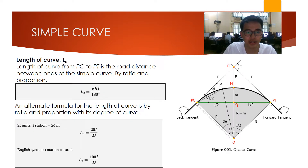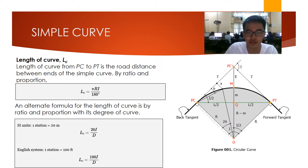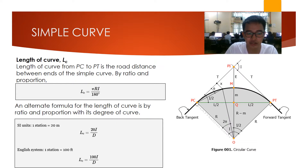We also have the length of curve, that is Lc. The length of curve from PC to PT is the road distance between the ends of the simple curve. By ratio and proportion, we can derive: Lc is equal to pi times radius times the angle of intersection divided by 180 degrees. An alternate formula for the length of curve by ratio and proportion with the degree of curve: in SI units, one station equals 20 meters, so length of curve equals 20I over D. In the English system, one station equals 100 feet, so Lc equals 100I over D. Also, if given the stationing of PC and PT, the length of curve equals the stationing of the point of tangency minus the stationing of the point of curvature.